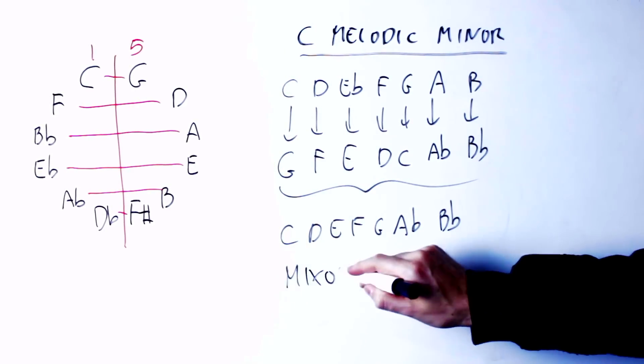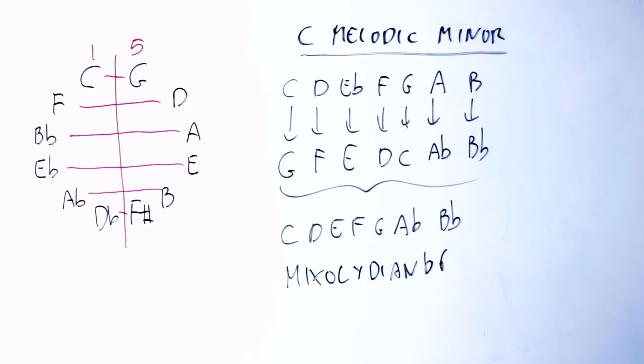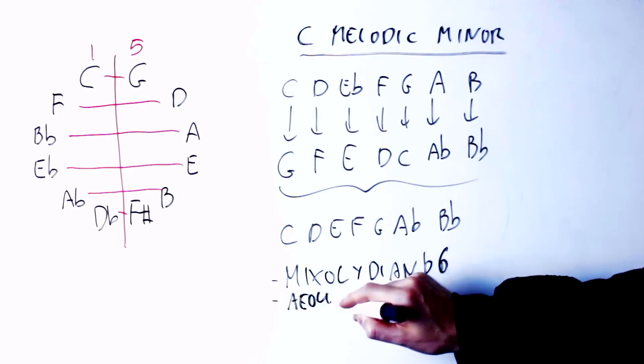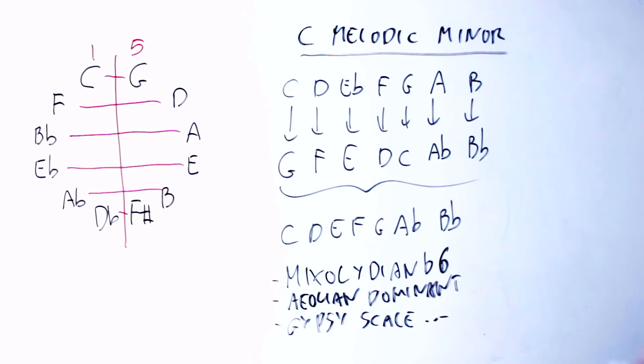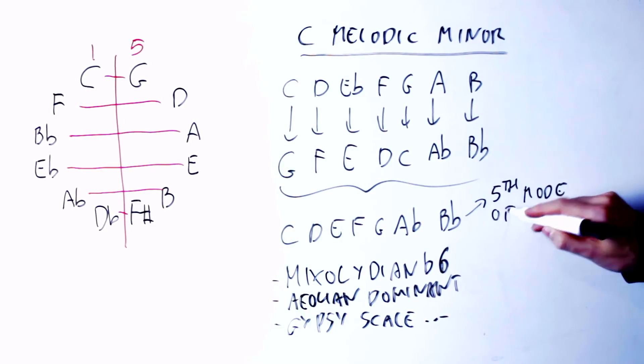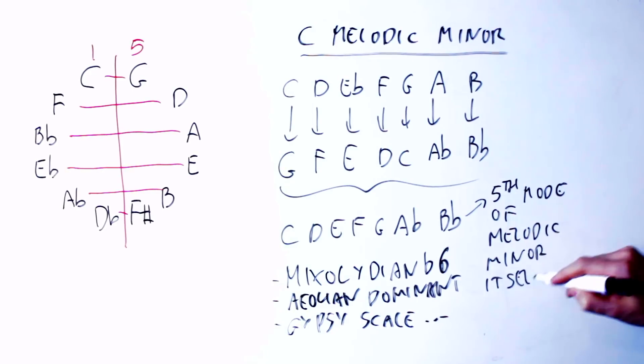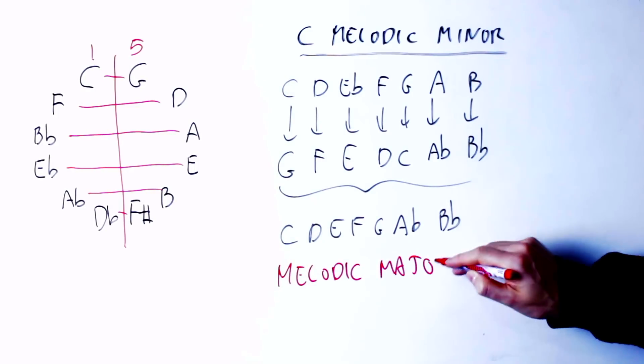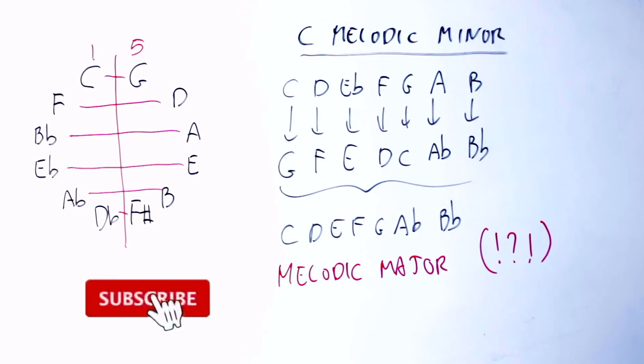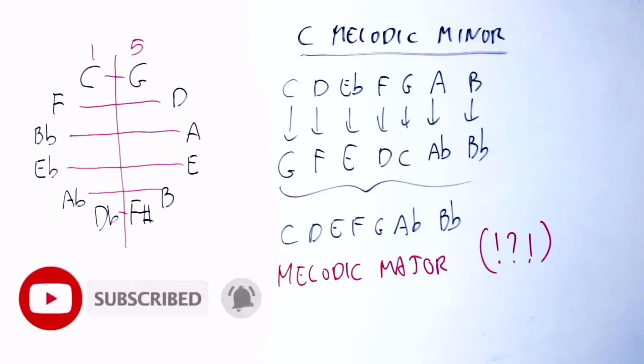Now this scale gets several names. The most common name for this scale is Mixolydian flat sixth, because that's exactly what it is. It's a Mixolydian scale in which I lower the six notes a half step. I've heard this scale also called with names like Aeolian Dominant or Gypsy Scale. This scale also happens to be the fifth mode of the melodic minor scale itself. But here comes the twist. Apparently, this scale is also called the melodic major. This actually surprised me, because I did not know this until I started researching and writing for this video.